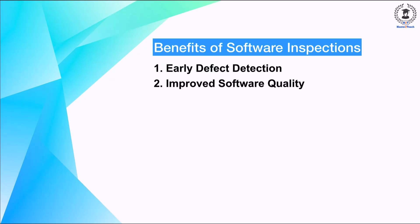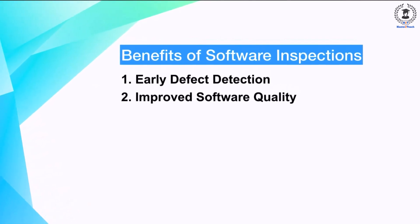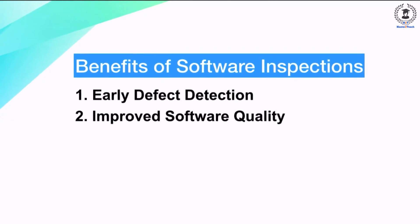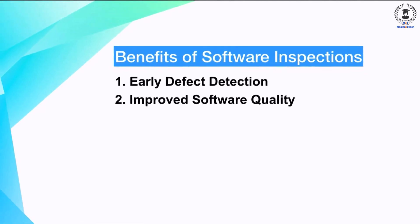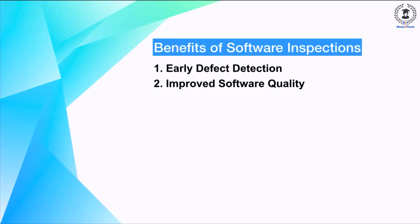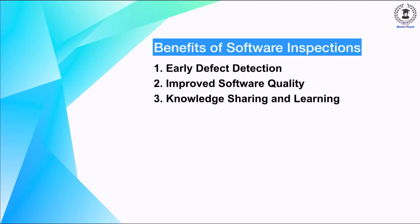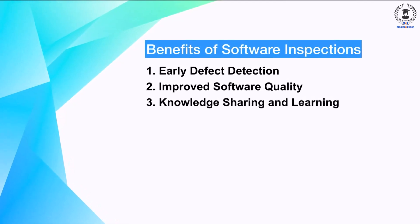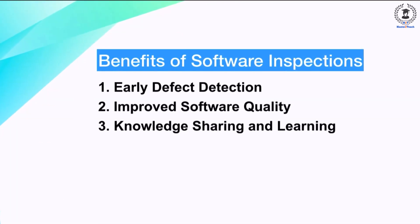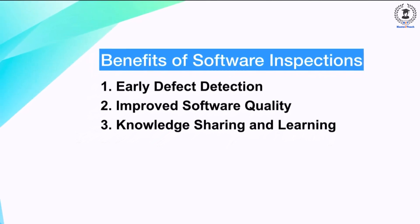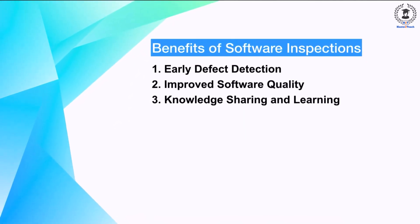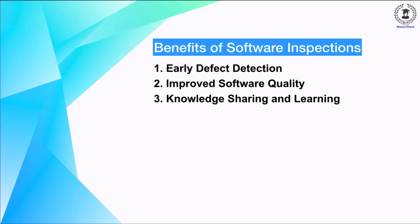Improved Software Quality. By identifying and correcting defects before they propagate further into the development process, inspections contribute to overall software quality improvement. This leads to a more reliable, robust, and maintainable software product. Knowledge Sharing and Learning: inspections provide an opportunity for team members to share knowledge and learn from each other's expertise. Reviewers gain insights into different aspects of the software and can improve their own skills through exposure to various coding styles, design patterns, and best practices.